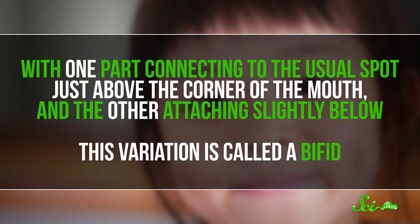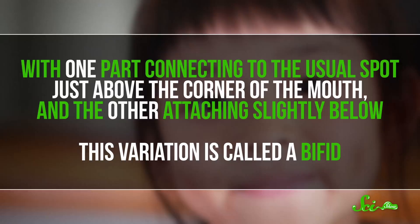But sometimes, instead of staying as one continuous muscle all the way from the cheekbone, the zygomaticus major splits into two and attaches in two spots, with one part connecting to the usual spot just above the corner of the mouth, and the other attaching slightly below. This variation is called a bifid.